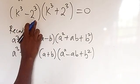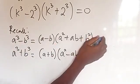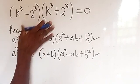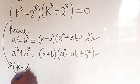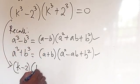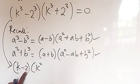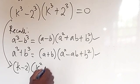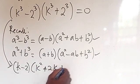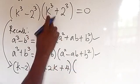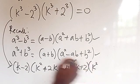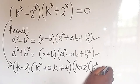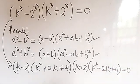The first factor takes the form of the difference of cubes and the second takes the form of the sum of cubes. So expanding: (k minus 2)(k² + 2k + 4) times (k plus 2)(k² minus 2k + 4) equals zero.